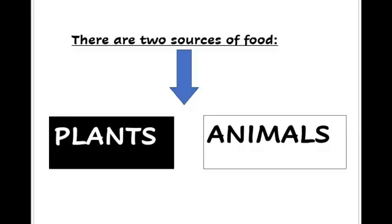Do you all drink milk? From where do we get milk? From cows. But cows are animals. So the second source of food for us is animals. There are two sources of food: one is plants and another one is animals.